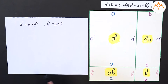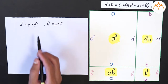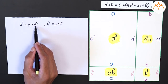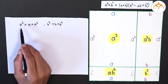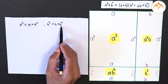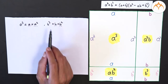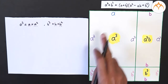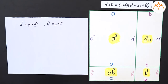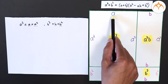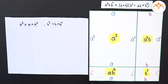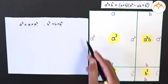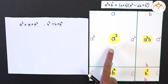So when we say a cube plus b cube, it is the addition of areas of two rectangles. Take a piece of paper — here this is length a and this one is a squared, so the area obtained is a into a squared which is equal to a cube.